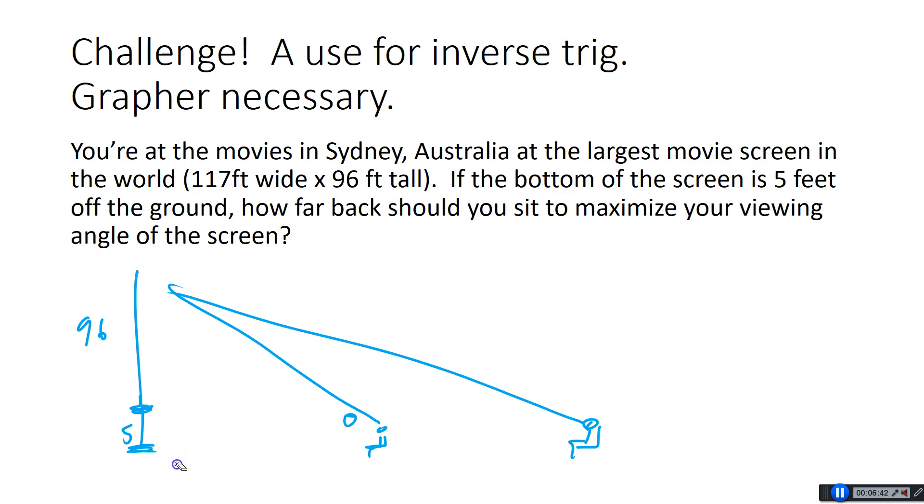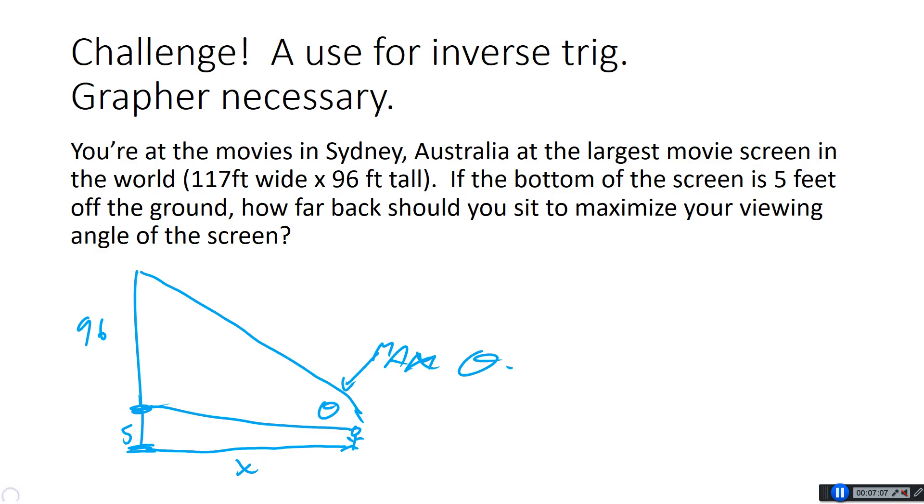There is some optimal place to sit here where your viewing angle of the screen, theta right here, is going to be the largest possible. It starts super small, then it gains, gets bigger, and then it's going to get small again as you move out. Let's get rid of all this mess and show what the problem's asking. So the question is, if you are here, it's 5 feet off the ground, so the viewing angle of the screen goes just on the screen here. So where should you sit in order to maximize that theta value?